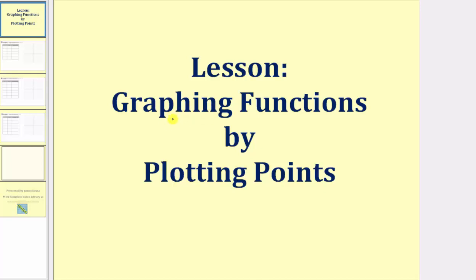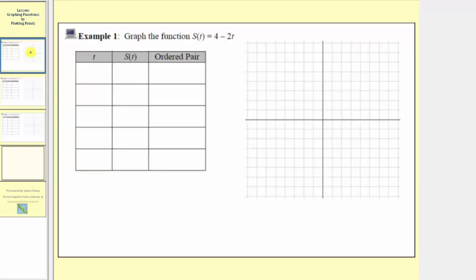Welcome to part one of the lesson on graphing functions by plotting points. Example one: we want to graph the function s of t equals four minus two t. Our function rule is that s of t subtracts two times the input from four.